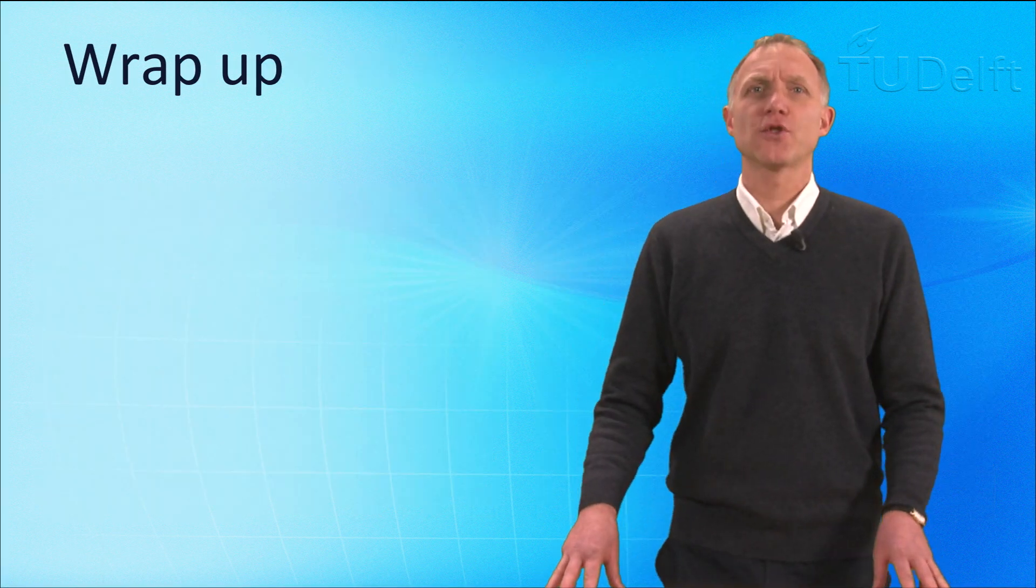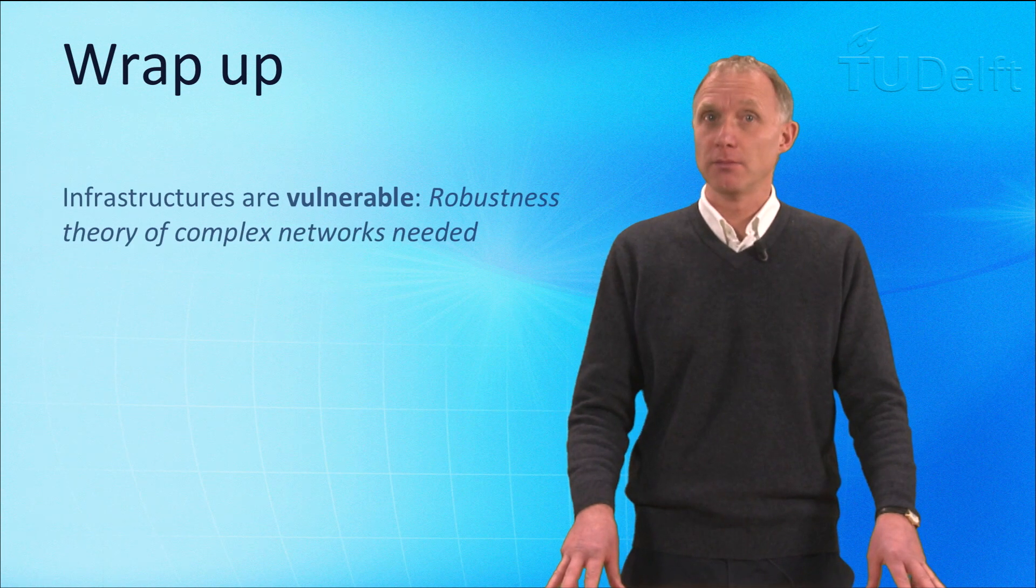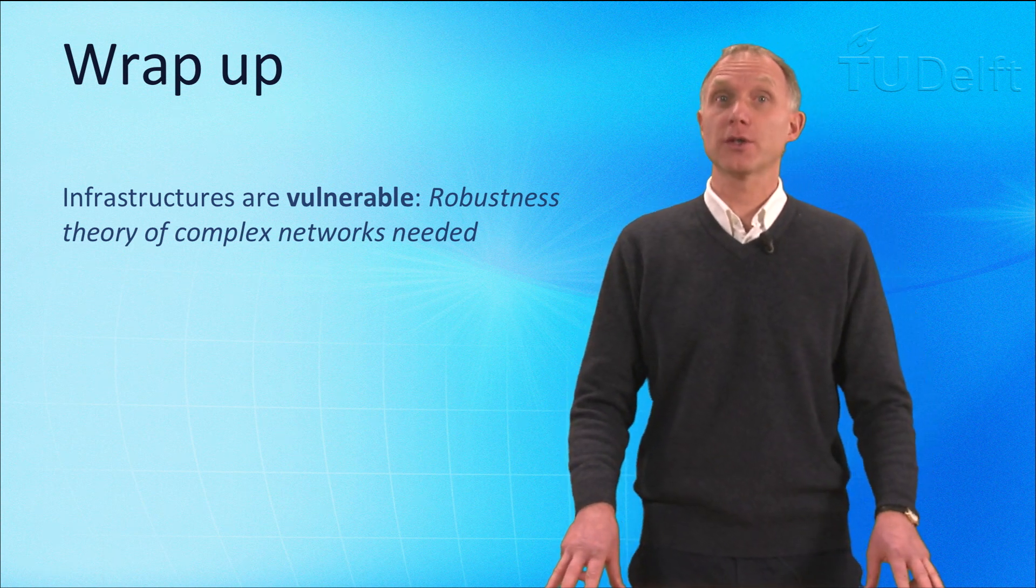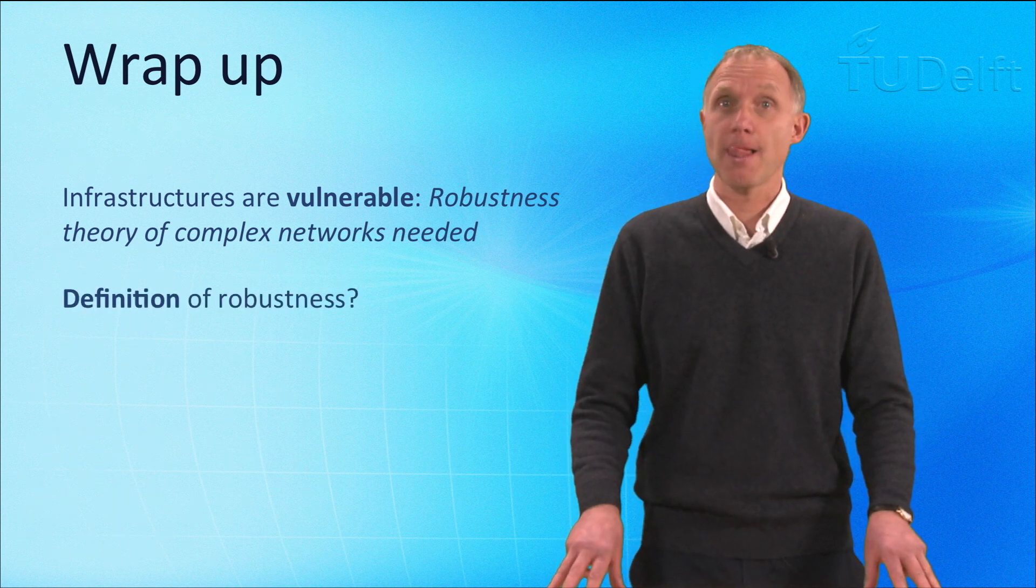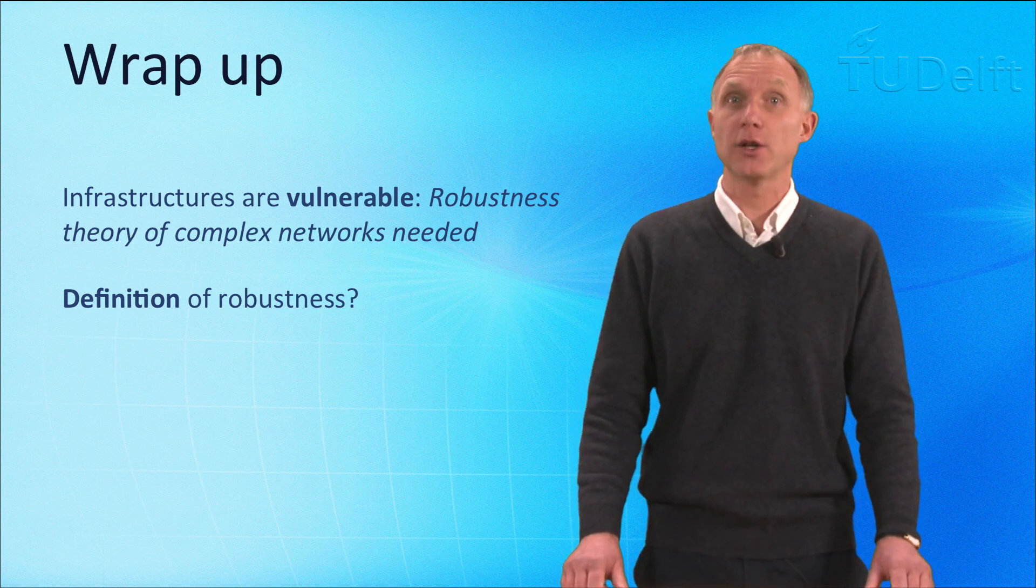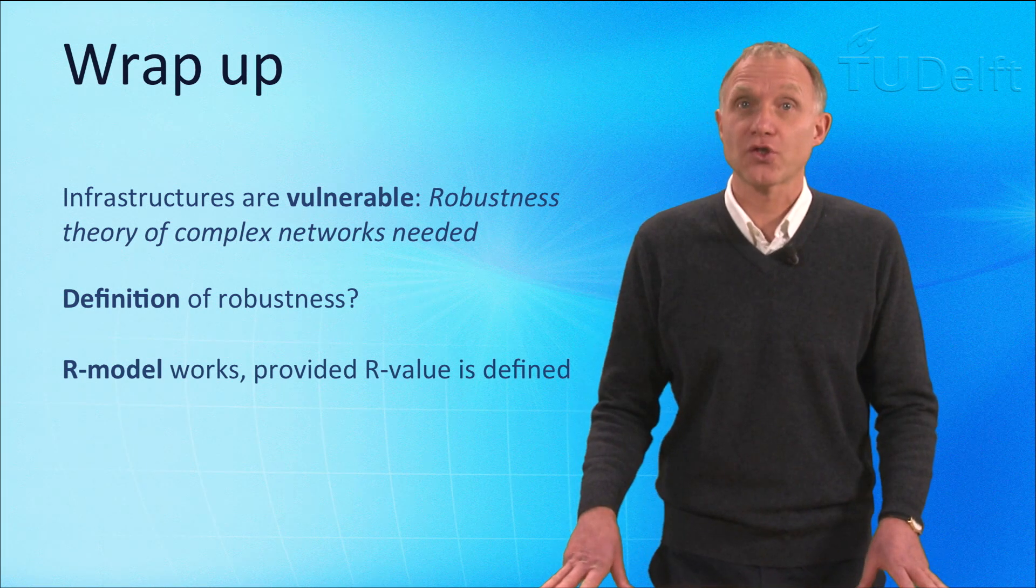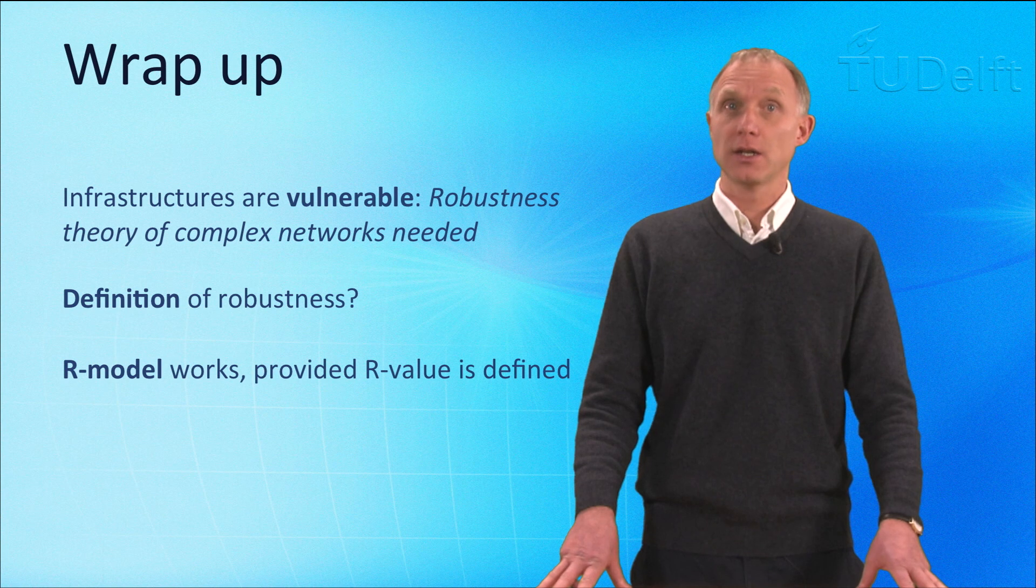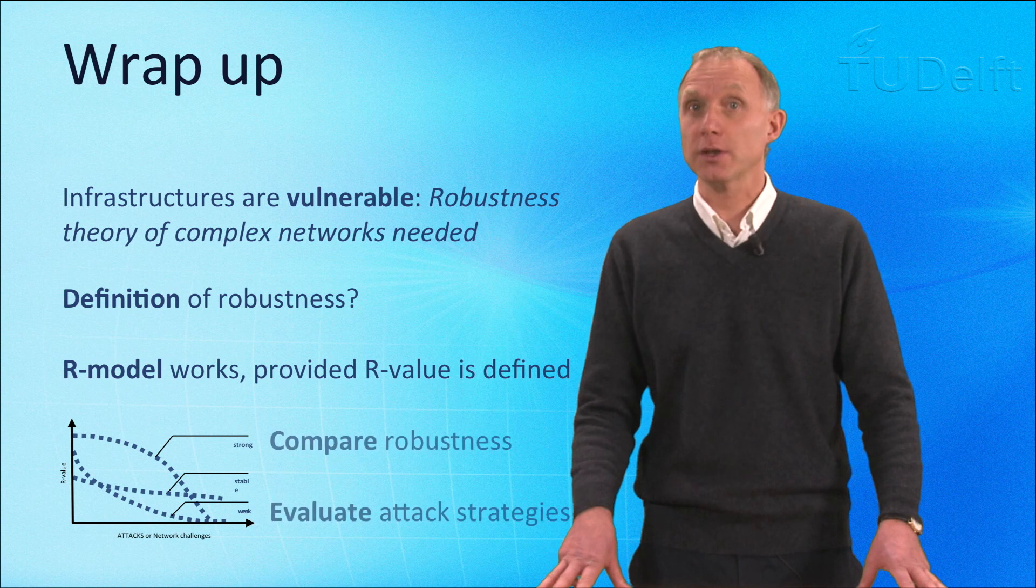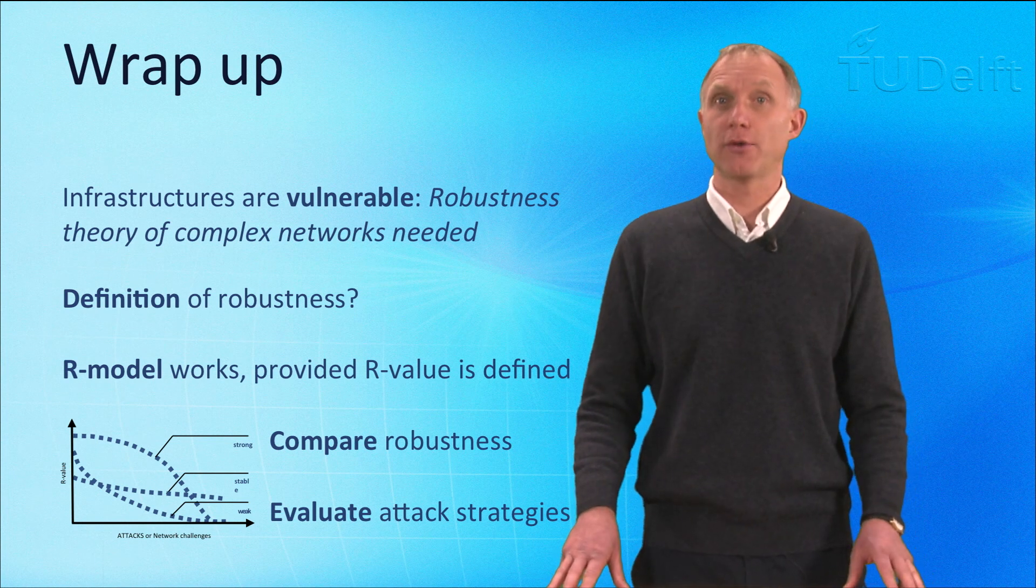To summarize, we have shown that infrastructures are vulnerable and that the robustness theory of complex networks is needed. But, an overall accepted definition of network robustness does not exist yet. However, the R model works, provided a network robustness value, the R value, is defined. A network is robust against challenges, such as random failures or attacks. Network robustness envelopes allow us to compare the robustness of different networks and the impact of an attack strategy. Thank you for your attention.